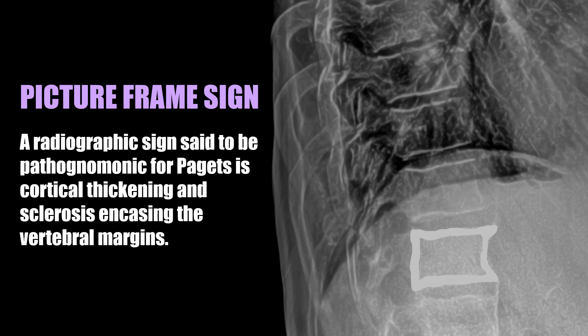There is a radiographic sign said to be pathognomonic for Paget's disease, which is cortical thickening and sclerosis encasing the vertebral margins, causing a picture frame sign.